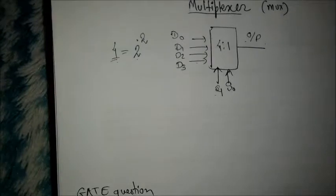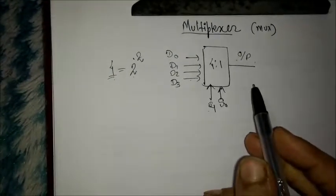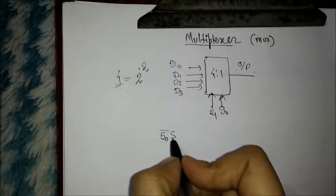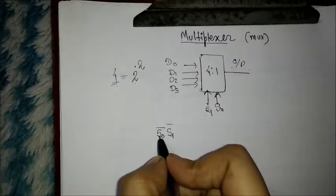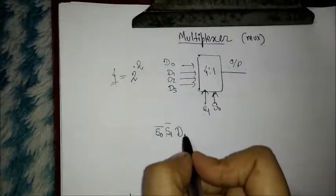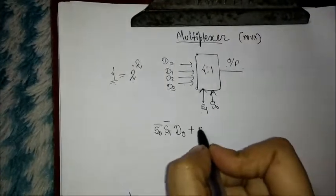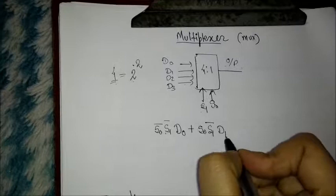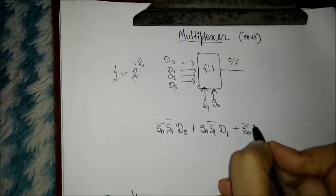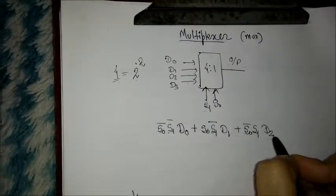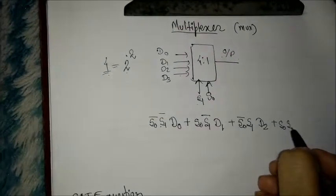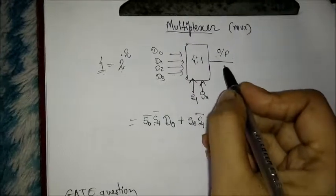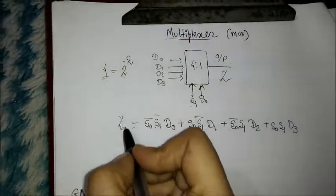Now there is a characteristic equation for this 4-to-1 MUX. The characteristic equation is: when both S0 and S1 are active low, D0 will be selected. When S0 is 1 and S1 is active low, D1 will be selected. When S0 bar and S1, D2 will be selected. And when both are active high, D3 will be selected. This is the output equation for Z.